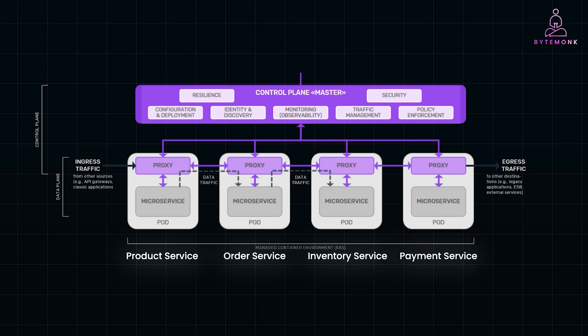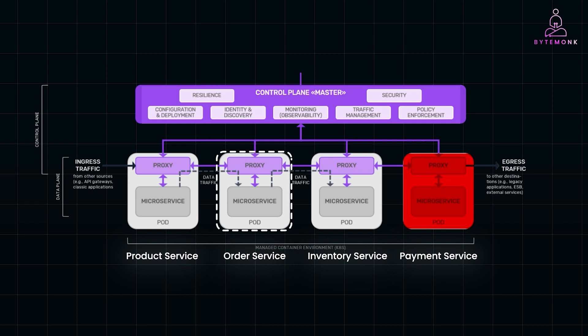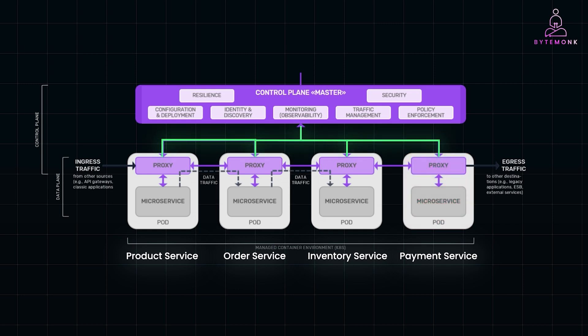In a typical microservices architecture, each of these services communicates with one another directly. But what happens if the payment service slows down or crashes? You need to update the order service but also want to ensure zero downtime. You want to secure communication between services to protect sensitive customer data.